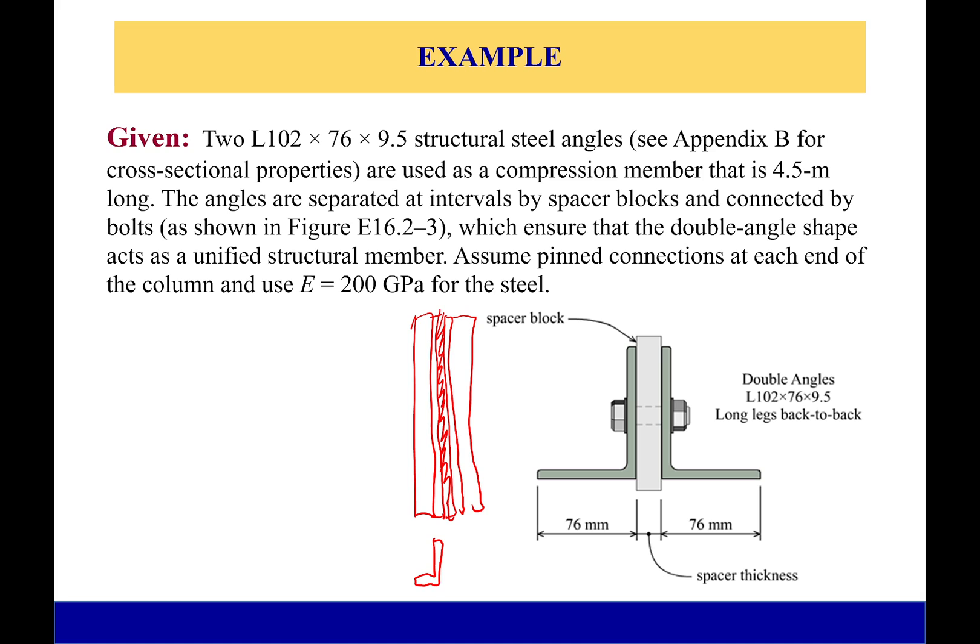Now what's an issue for us is that this can buckle in one of two ways. I can buckle about this axis as it begins bending in that direction, or I can buckle about this axis. And I don't know to start which one's going to fail first, so I'll have to check both of these.